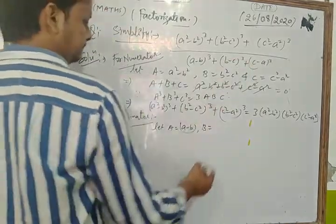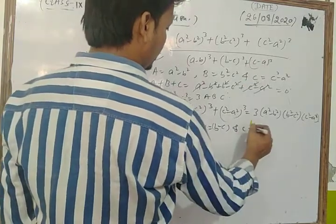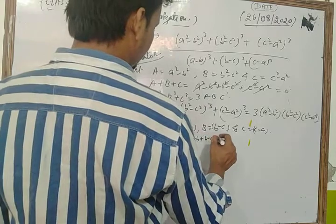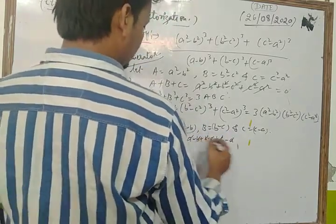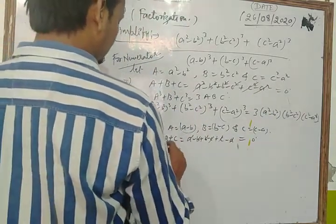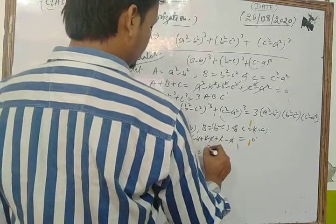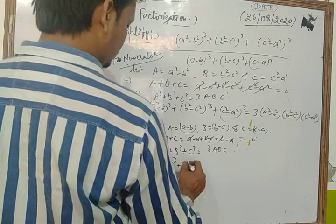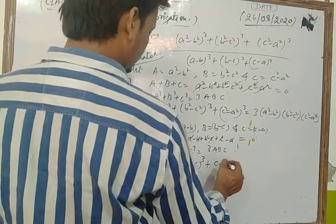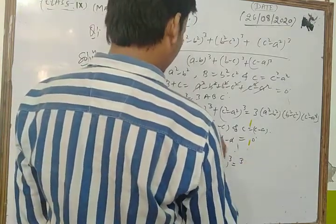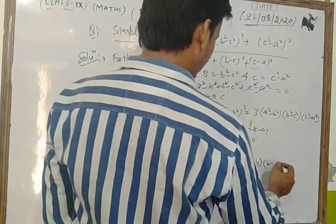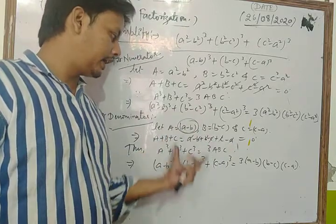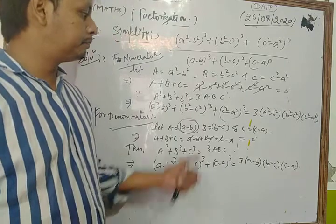For the denominator, let a = a - b, b = b - c, and c = c - a. Then a + b + c = (a - b) + (b - c) + (c - a) = 0. So we have a³ + b³ + c³ = 3abc, meaning (a - b)³ + (b - c)³ + (c - a)³ = 3(a - b)(b - c)(c - a).